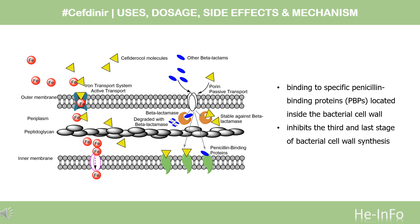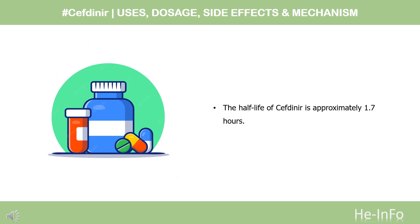One in vitro study suggests that cefdinir inhibits myeloperoxidase release extracellularly, though the importance of this potential drug target in relation to its mechanism of action is unknown. Half-life: The average plasma elimination half-life is about 1.7 hours in adults. In children and healthy infants, plasma elimination half-life ranges from 1.2 to 1.5 hours.